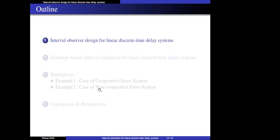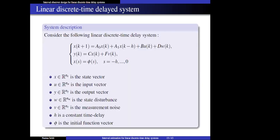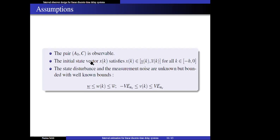We start with the first method: interval observer design for linear discrete time delay systems. We consider a linear discrete system where x, u, and y are respectively the state vector, input, and output vectors; h is the time delay; w and v are the disturbance and measurement noises; and phi is the initial function vector. The required assumptions are: the system is observable, the initial state vector is bounded by two known bounds — lower x and upper x — and the disturbance and measurement noise are bounded with known lower and upper bounds; v is a positive scalar.